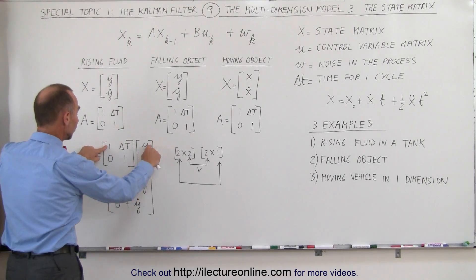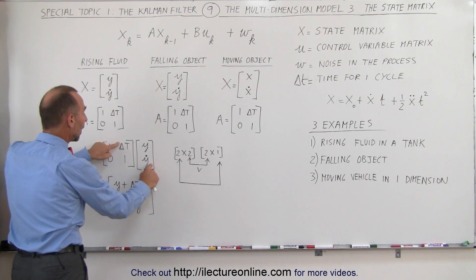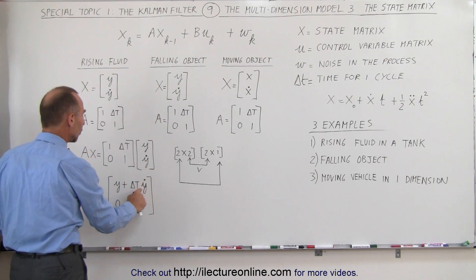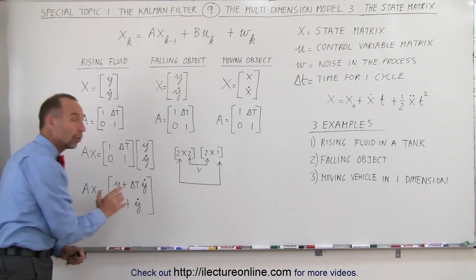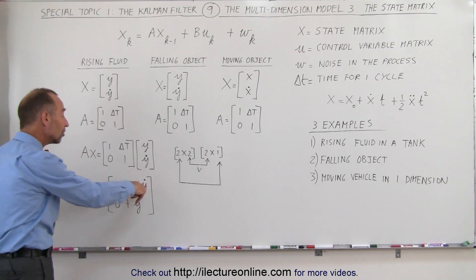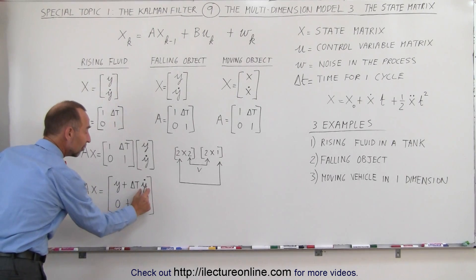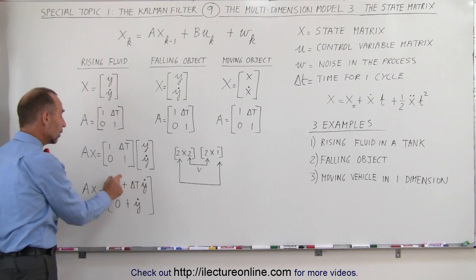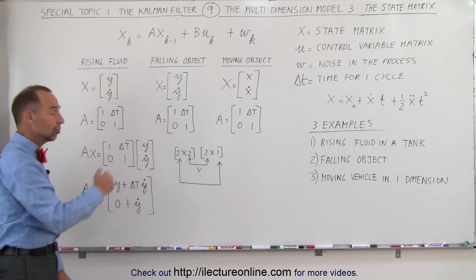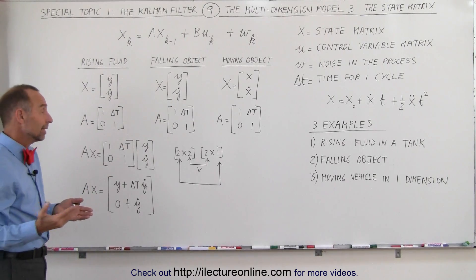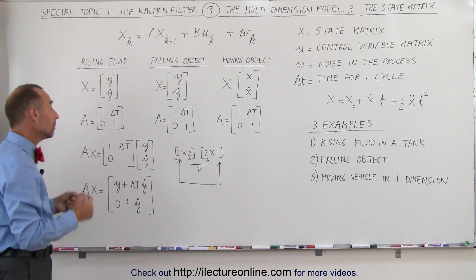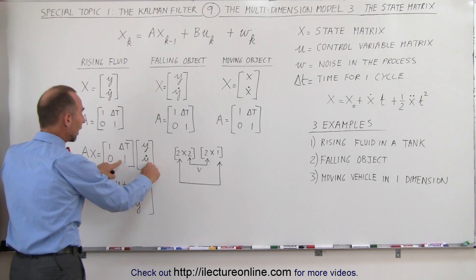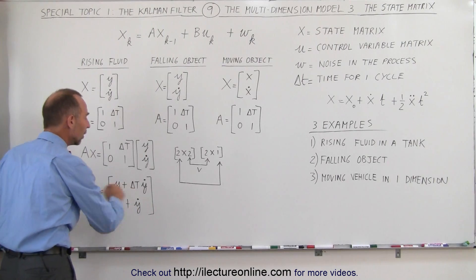When we do that, we get 1 times y plus delta t times y-dot, or the velocity in the y direction — so y plus delta t times y-dot — which represents the new position relative to the old position plus how it changed because of its velocity. The velocity, assuming no acceleration, will remain the same: we get 0 times y plus 1 times y-dot, and that will be its new velocity.